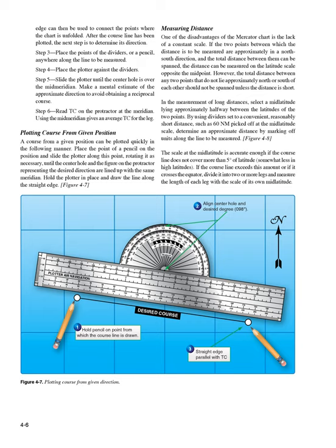By using dividers set to a convenient, reasonably short distance, such as 60 nautical miles picked off at the mid-latitude scale, determine an approximate distance by marking off units along the line to be measured. Figure 4-8. The scale at the mid-latitude is accurate enough if the course line does not cover more than 5 degrees of latitude, somewhat less in high latitudes. If the course line exceeds this amount or crosses the equator, divide it into two or more legs and measure each leg with a scale of its own mid-latitude.